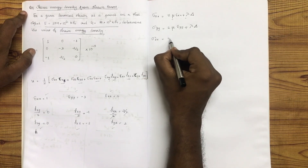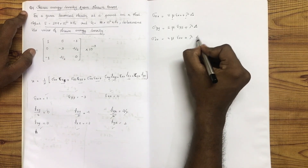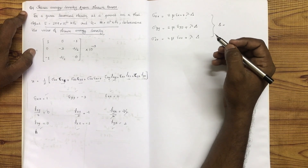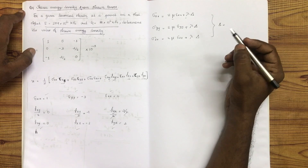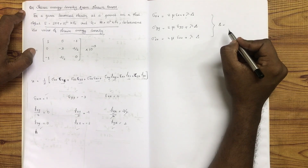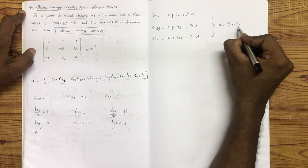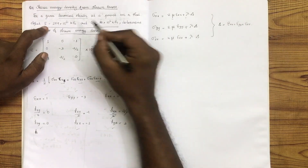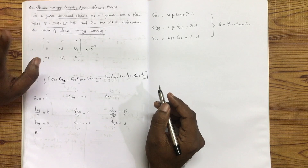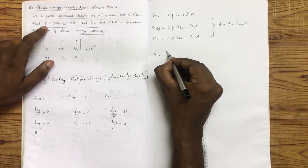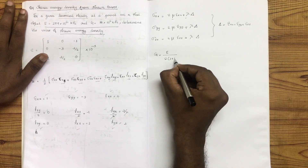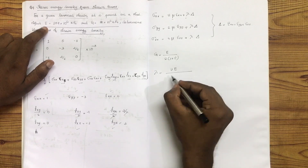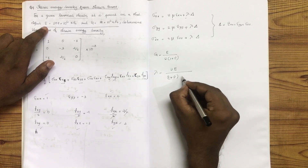Delta is the volumetric strain: εxx plus εyy plus εzz. Lambda is the Lamé constant, equal to E·ν divided by (1+ν)(1−2ν), and G equals mu equals E divided by 2(1+ν). For the Poisson's ratio mu (ν), we use the material values.